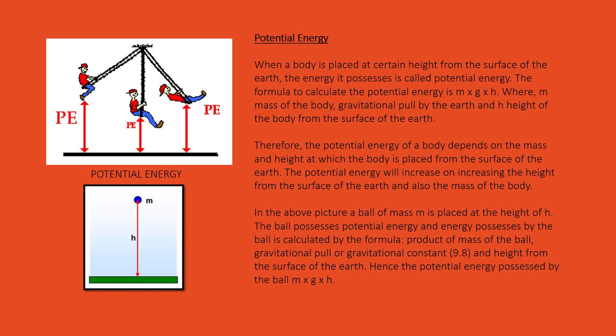Potential Energy: When a body is placed at a certain height from the surface of the earth, the energy it possesses is called potential energy. The formula to calculate the potential energy is m multiplied by g multiplied by h, where m is mass of the body, g is gravitational pull by the earth, and h is height of the body from the surface of the earth. Therefore, the potential energy of a body depends on the mass and height at which the body is placed from the surface of the earth.